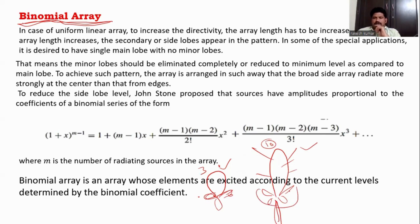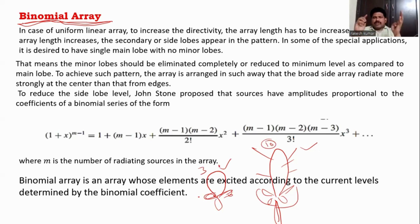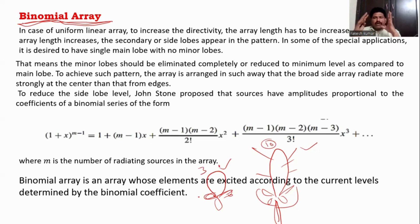Are side lobes required? No, not at all — side lobes are unwanted radiations. As you increase the number of elements, up to now you have been providing the same magnitude to all elements — for example, 10 amperes to the first element, 10 amperes to the second, third, and so on with equal currents. If you do that, as you increase the number of elements, directivity increases but more side lobes come into the picture.